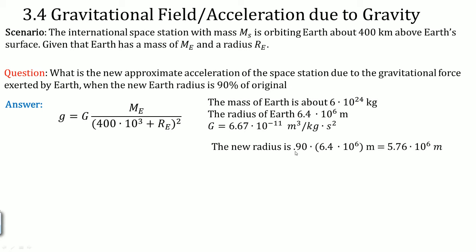The new radius is going to be 0.90, because this needs to be in a decimal for us to multiply it to the radius of Earth. Earth has an original radius of 6.4 times 10 to the sixth. Once we multiply it by 90% or 0.90, the new radius of Earth is 5.76 times 10 to the sixth meters.